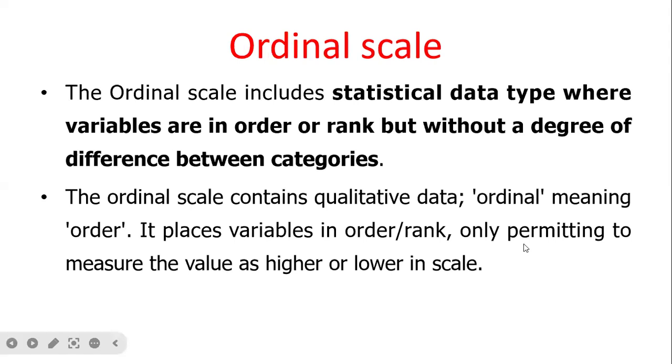The ordinal scale includes the statistical data type where variables are in order or rank, but without a degree of difference between the categories. The ordinal scale contains qualitative data. Ordinal means order. It places variables in order or rank, only permitting to measure the value as higher or lower in scale, like the Army rank.